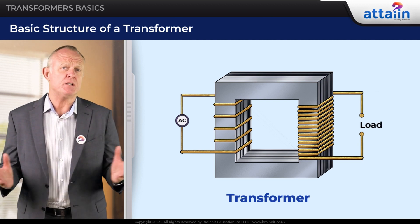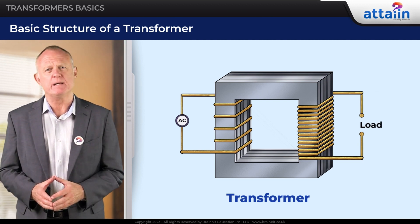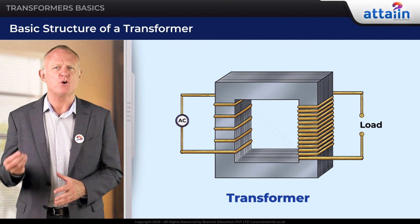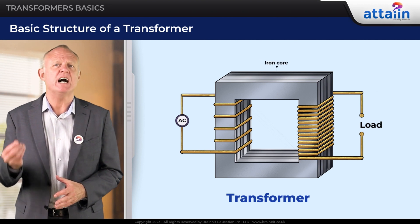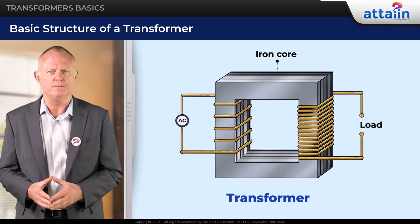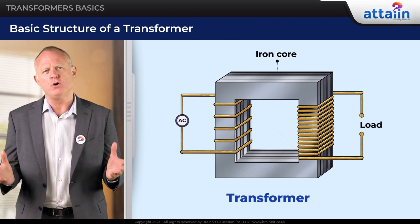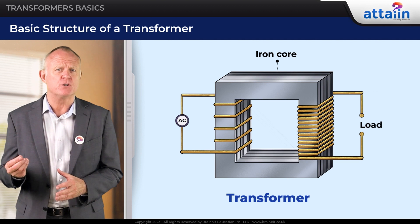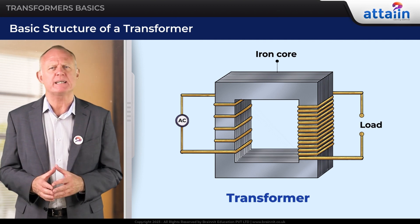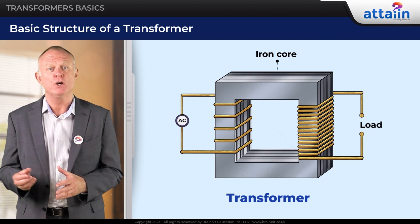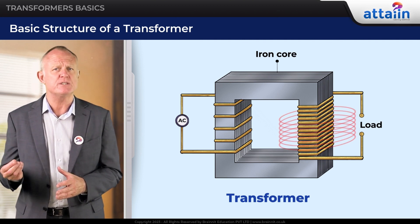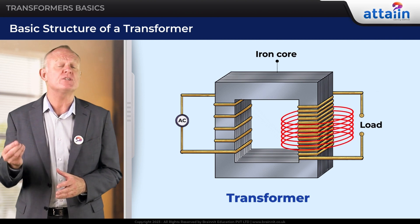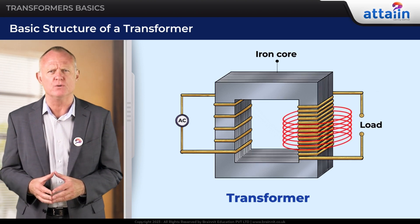The key component that enables energy transfer between the coils is the iron core. The alternating current in the primary coil produces a changing magnetic field, which induces an alternating voltage in the secondary coil.